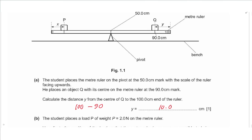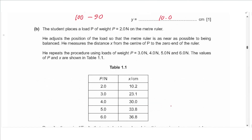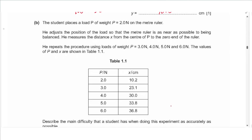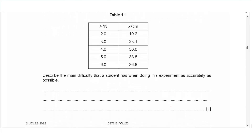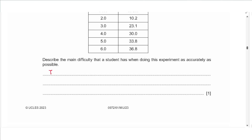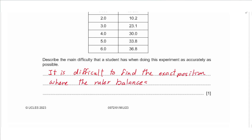Part b says the student places a load P of weight P equals 2.0 newtons on the meter ruler. He adjusts the position of the load so that the meter ruler is as near as possible to being balanced. He measures the distance x from the center of P to the zero end of the ruler. He repeats the procedure using loads of three, four, five and six newtons. Describe the main difficulty: it is difficult to find the exact position where the ruler balances, as it never balances horizontally exactly. We determine this by averaging.